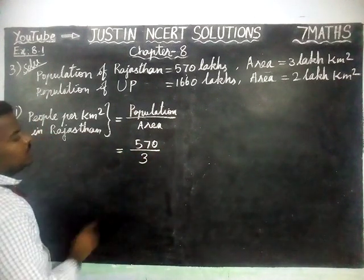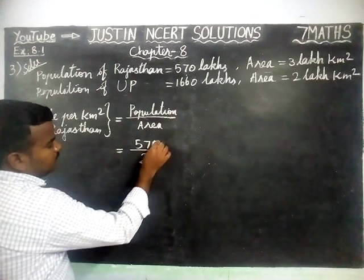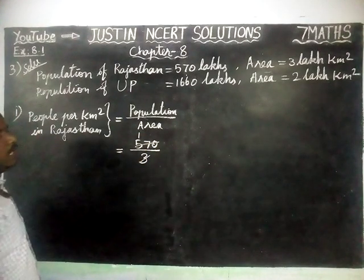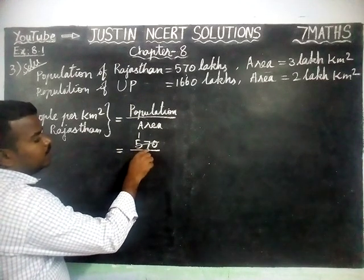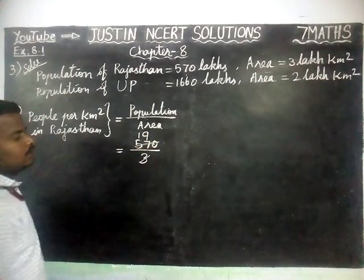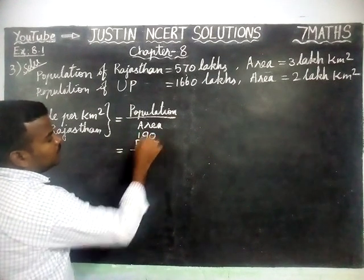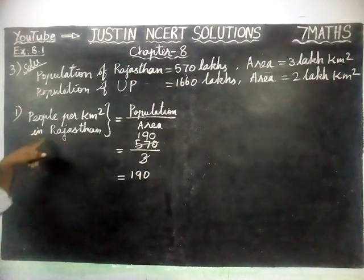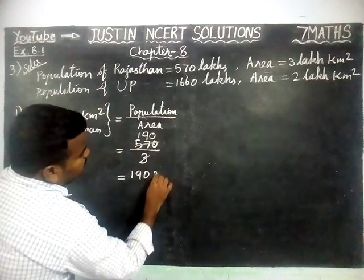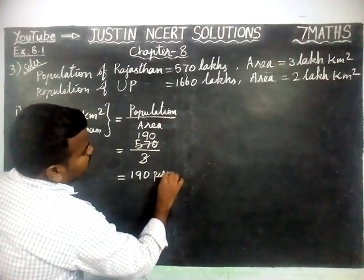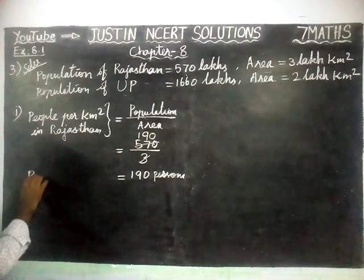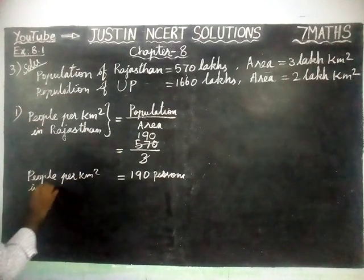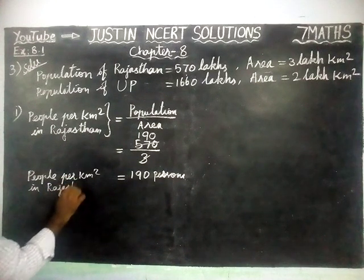570 divided by 3: in 5 we have only one 3, remaining 2. Now 27 — nine 3s are 27, and then we have 0, so the result is 190. Therefore, people per km² in Rajasthan equals 190 persons per km².